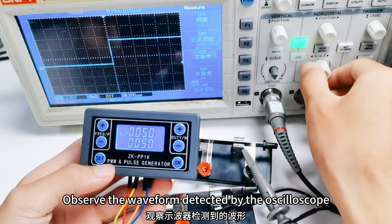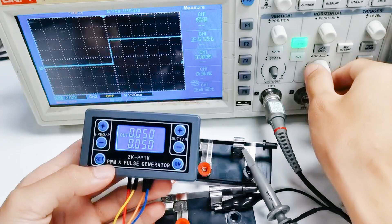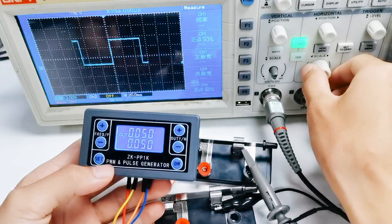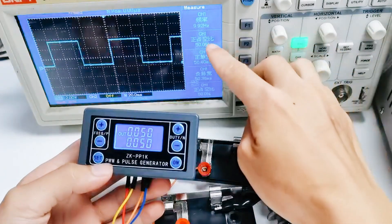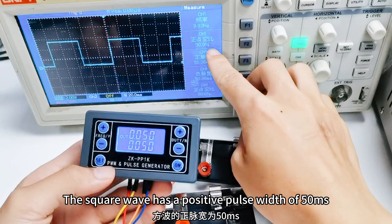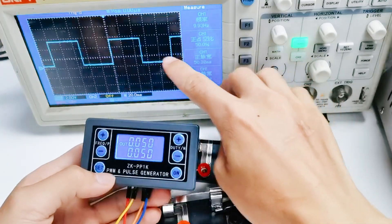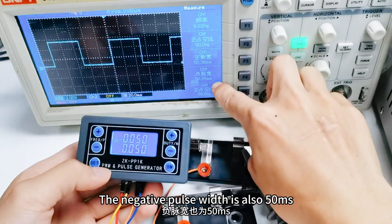Observe the waveform detected by the oscilloscope. The square wave has a positive pause width of 50 milliseconds. The negative pause width is also 50 milliseconds.